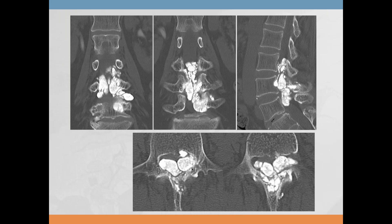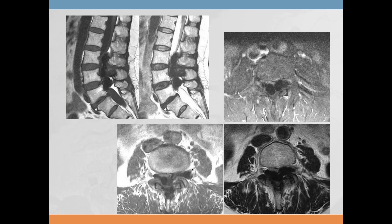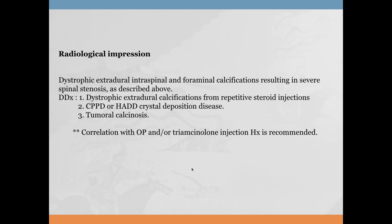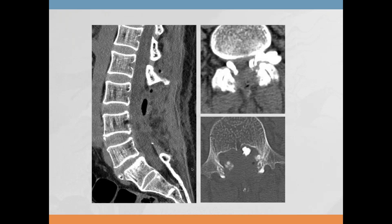There's a CT showing densely calcified structures in the spinal canal overlying the pedicles of L3, L4, and L5. At this point it becomes clear the patient has had multiple steroid injections. The differential considered included dystrophic extradural intraspinal foraminal calcifications in severe spinal stenosis, CPPD, and tumoral calcinosis. They went to surgery and these are the post-op findings.